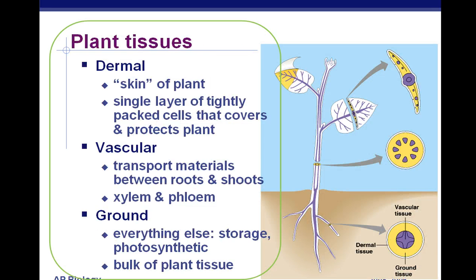There are three types of plant tissues that you're responsible for knowing. Remember that a tissue is a group of cells that have the same function. Plants have true tissues — they are not protists. The three main types of tissues are dermal, vascular, and ground.